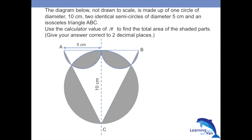The question reads: the diagram below, not drawn to scale, is made up of one circle of diameter 10 centimeters, two identical semicircles of diameter 5 centimeters, and an isosceles triangle ABC. Use the calculator value of pi to find the total area of the shaded parts. Give your answer correct to two decimal places.